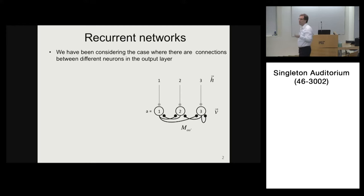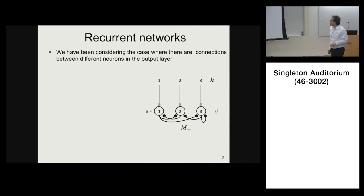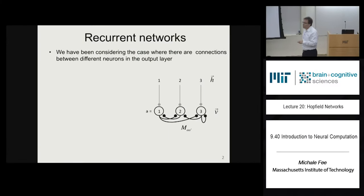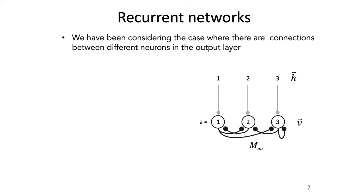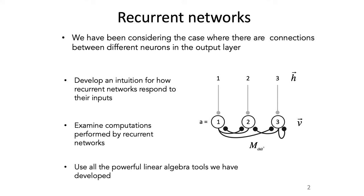Today we're going to finish up with recurrent neural networks. We've been talking about the case where we have a layer of neurons with recurrent connections between neurons in the output layer. We've been developing the mathematical tools to describe the behavior of these networks and how they respond to their inputs, as well as the different kinds of computations that recurrent neural networks can perform.